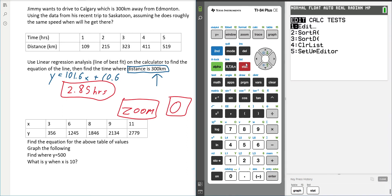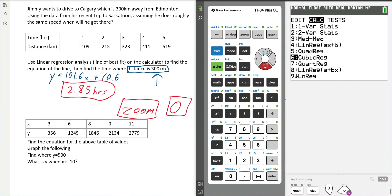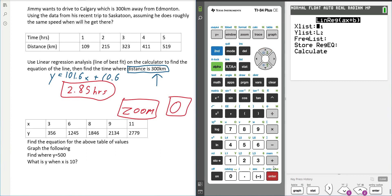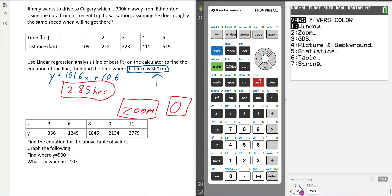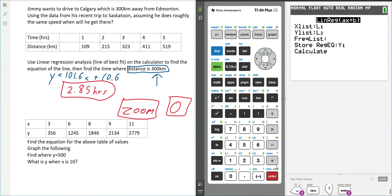Okay, so here we have ourselves some data. We're going to press stat, calc. We're going to go down to linear regression. So find the equation for the above table values, that's what we're doing right now. We're going to go down to store, and we're going to store variable, store as a function, and that's y1. We're going to calculate.